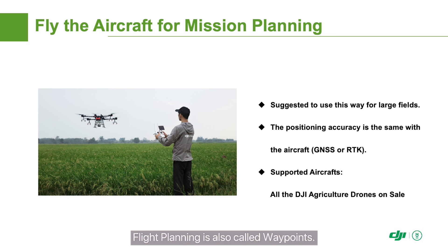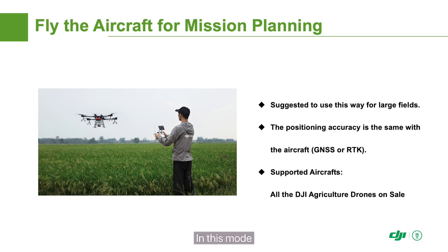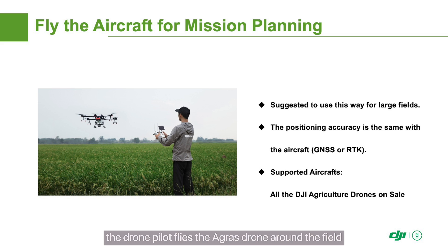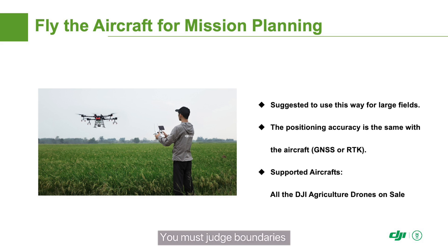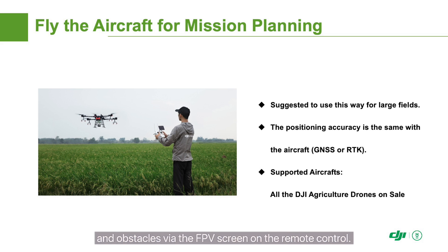Flight planning is also called Waypoints. In this mode, the drone pilot flies the Agris drone around the field and adds waypoints during the flight. This planning method is suitable for large, regular fields with few obstacles. You must judge boundaries and obstacles via the FPV screen on the remote control.